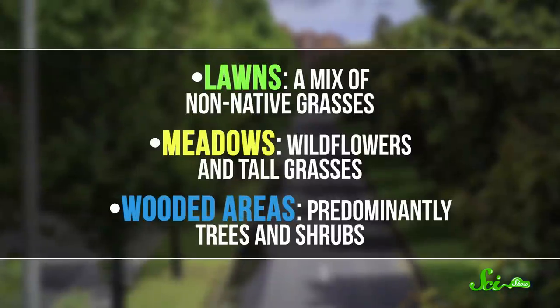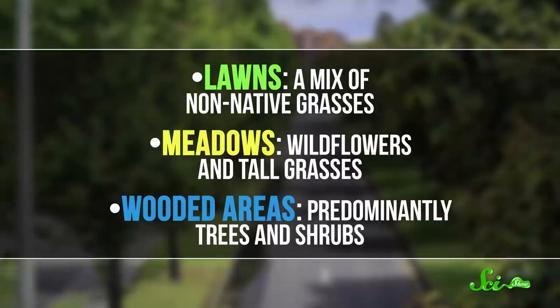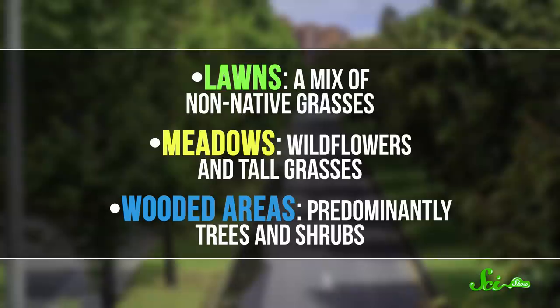They were especially interested in whether the types of vegetation in medians and verges make insect mortality numbers better or worse. They looked at lawns, which were a mix of non-native grasses, meadows, which featured wildflowers and tall grasses, and wooded areas, which were predominantly trees and shrubs.